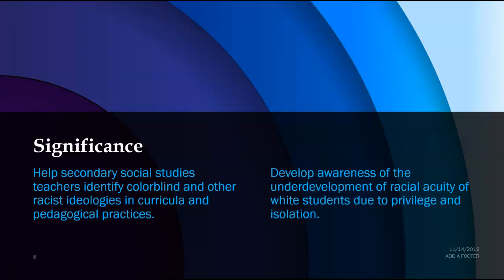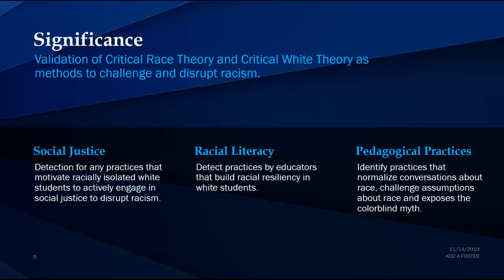The significance of this study is to help secondary social studies teachers identify colorblind and other racist ideologies in the curricula and instructional practices, and also to help them develop an awareness of the underdevelopment of racial acuity among white students due to privilege and isolation. Another significance is the validation of the use of critical race theory and critical white theory as methods to challenge and disrupt racism. This study will examine components of social justice, detecting practices of racial literacy, identifying pedagogical practices that normalize conversations about race, challenge assumptions about race, and expose the colorblind myth.